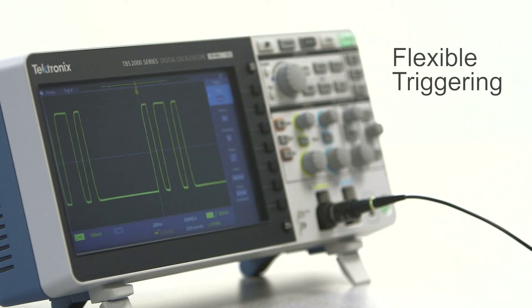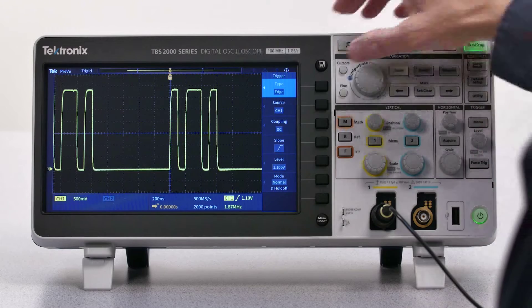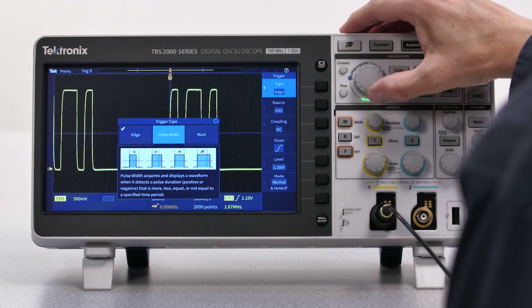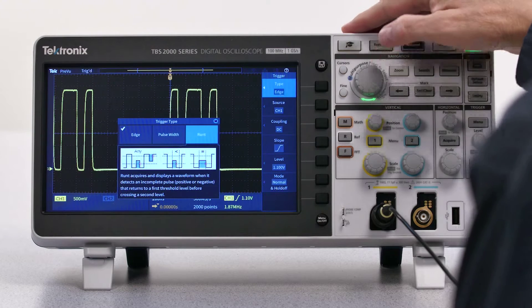Most of the time, you'll probably use edge triggering, but when you're hunting for trouble, the TBS 2000 provides flexible triggers like pulse width and runt triggers. On-screen tips explain how they work.